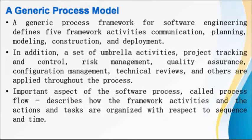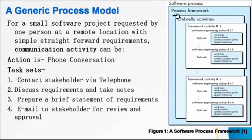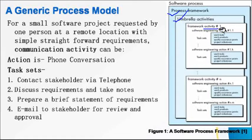An important aspect of the software process called process flow describes how the framework activities, actions, and tasks are organized with respect to sequence and time. As you can see, the process framework resides here and the umbrella activities are accompanied throughout the project life cycle. An activity comprises actions — from action one to action k — and each action will in turn have task sets.